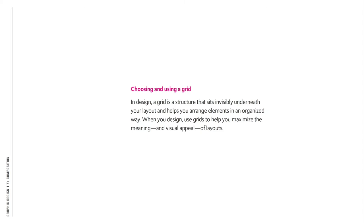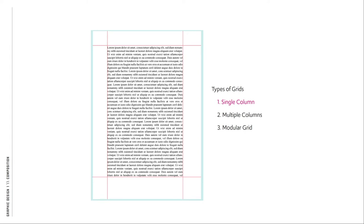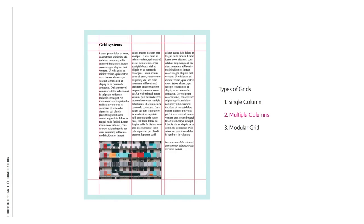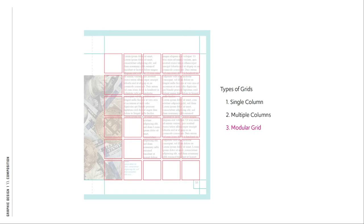In design, a grid is a structure that sits invisibly underneath your layout and helps you arrange elements in an organized way. Use grids to maximize the meaning and visual appeal of layouts. There are three basic types of grids. A single column grid is seen in most novels or books. Multiple columns — typically a three-column grid — are usually found in magazines. The modular grid gives multiple touch points; a basic five-by-six modular grid provides many small squares.